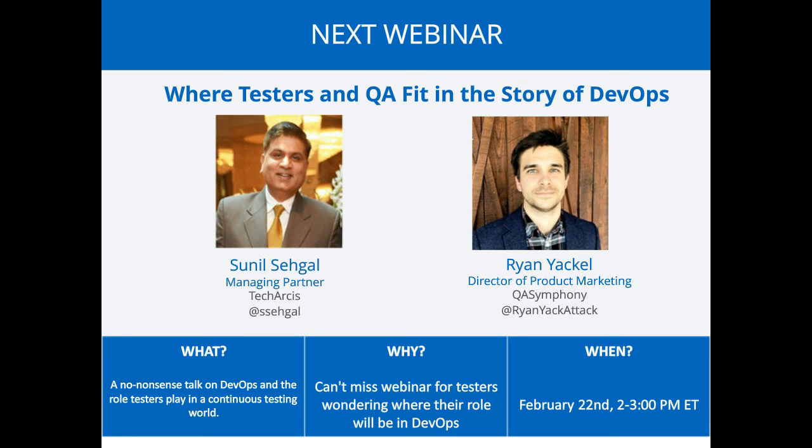Before we get into content today, I want to let you know about an upcoming webinar you might be interested in: where testers and QA fit in the story of DevOps. This will cover how testing teams need to evolve in the new world of DevOps. That's going to be on February 22nd. There's a link in the resources widget in the upper left-hand corner to register right now. It's featuring Sunil Singal from TechArchics and Ryan Yackel, Director of Product Marketing for QA Symphony.